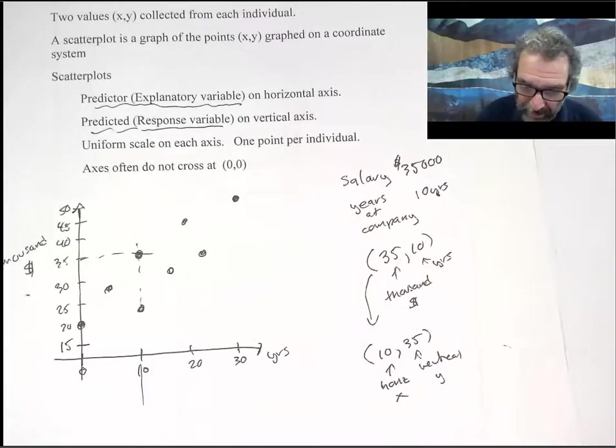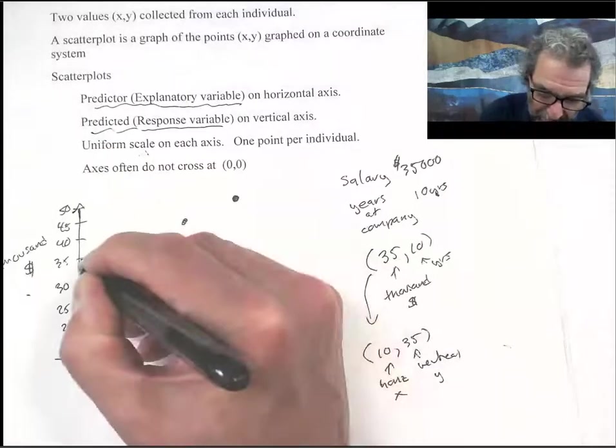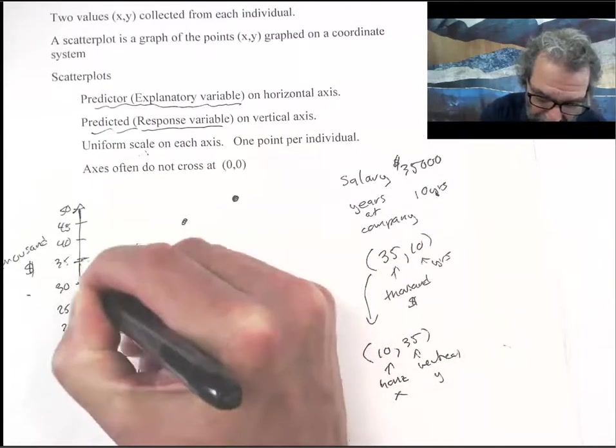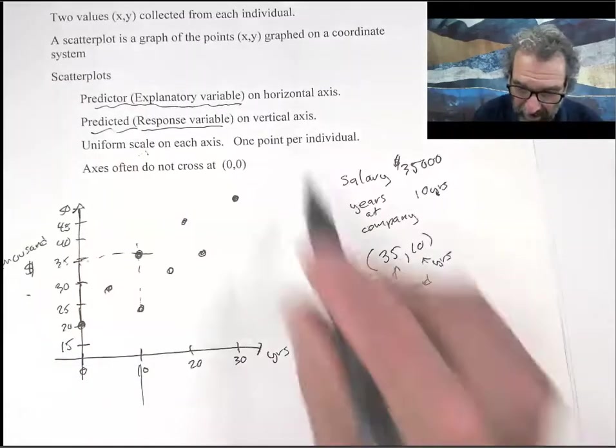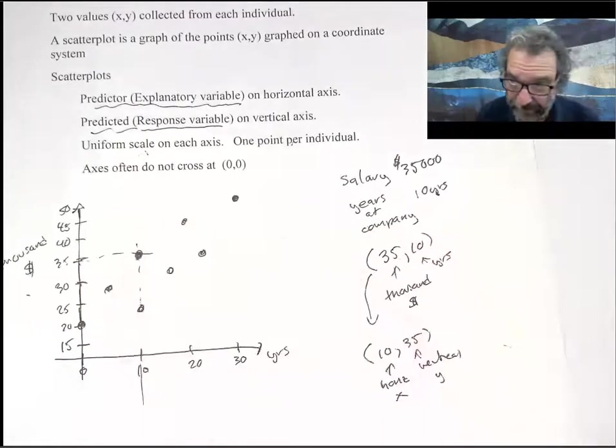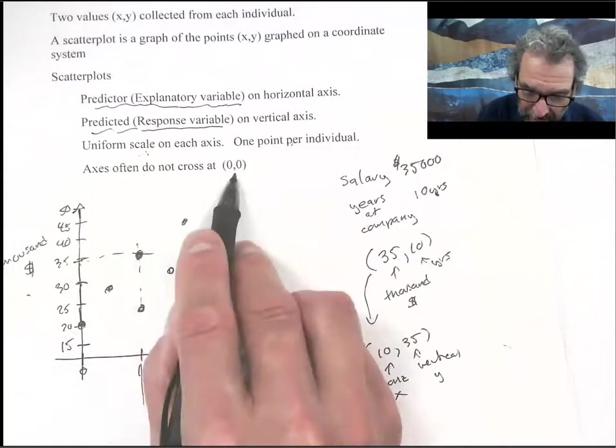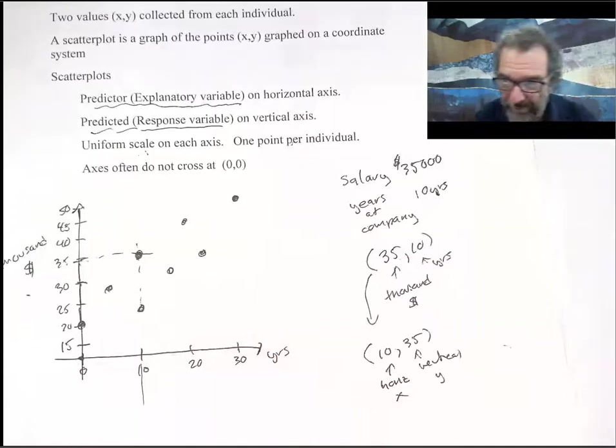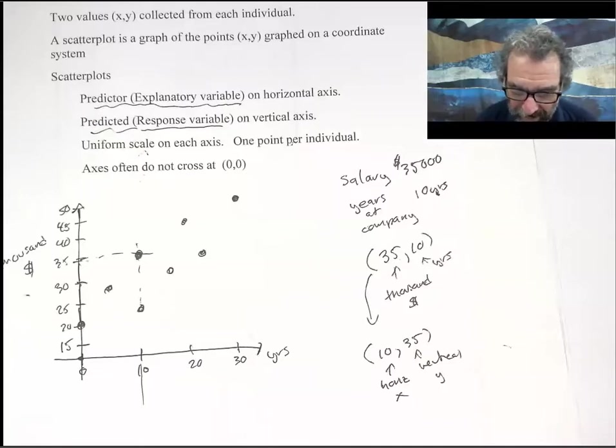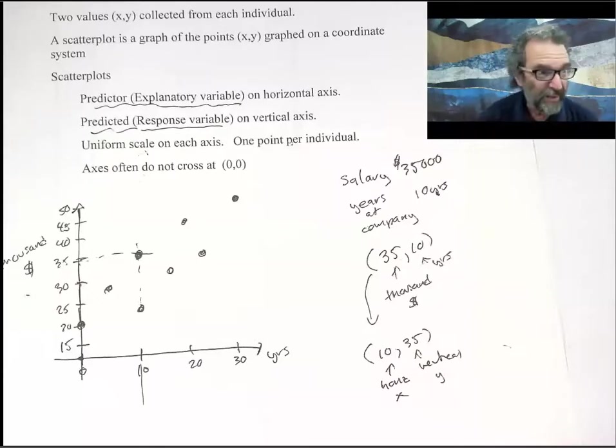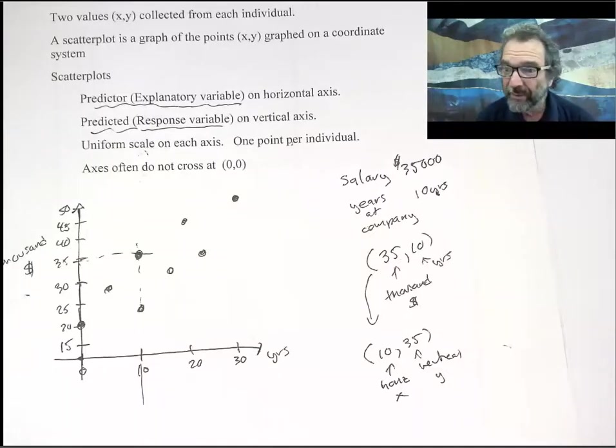One of the points here, a uniform scale on each axis. So on the vertical axis, same way. If that's five units, that same distance is five units all the way along. And one point for individual. So each dot represents a person. And the axes often do not cross at 0,0. So this position here doesn't have to be the origin. For many graphs, 0,0 is not part of the region of interest. If you tried to do that here, most of the graph would be way up in the top corner. What's the point of doing that? There isn't one.